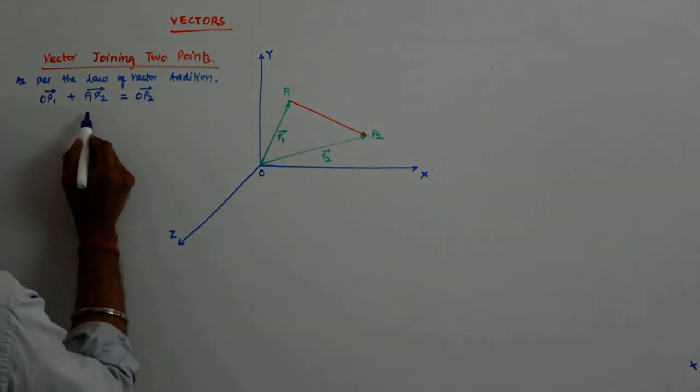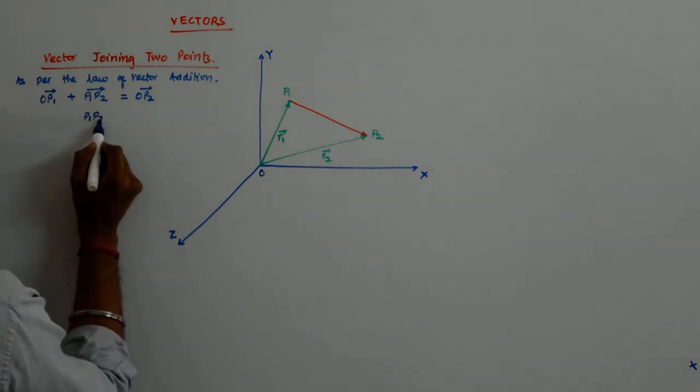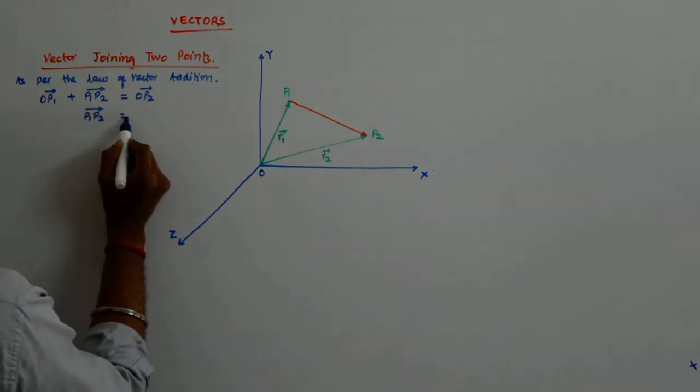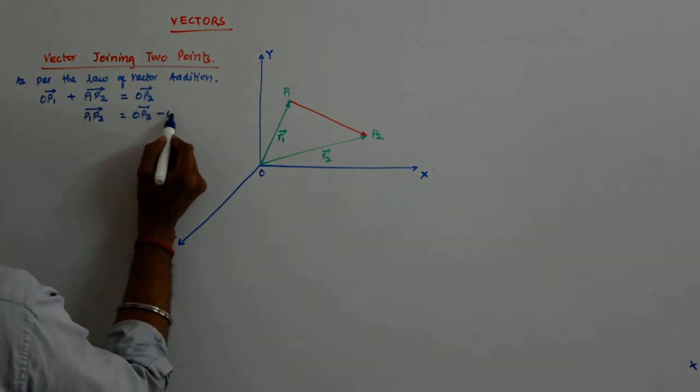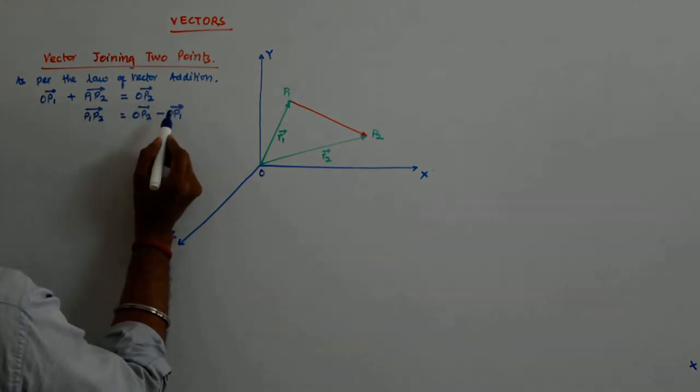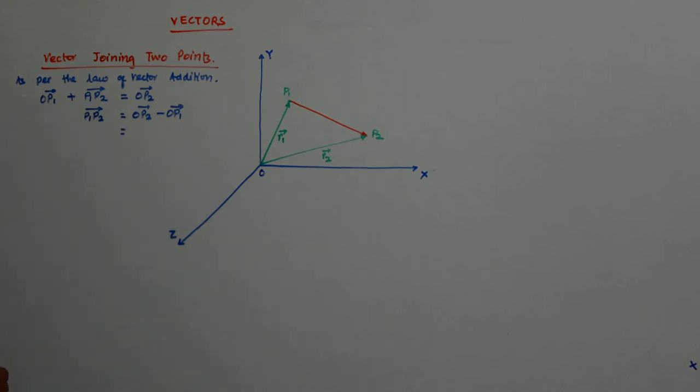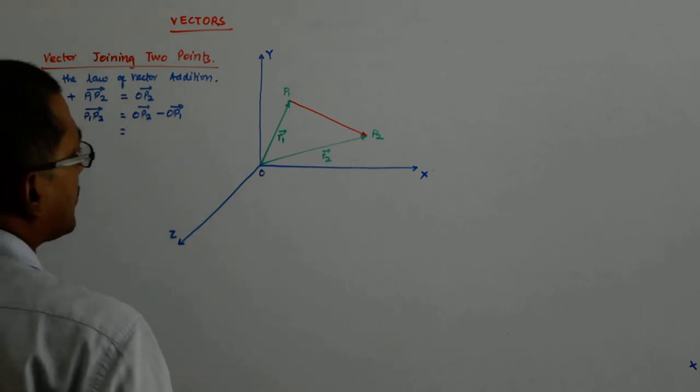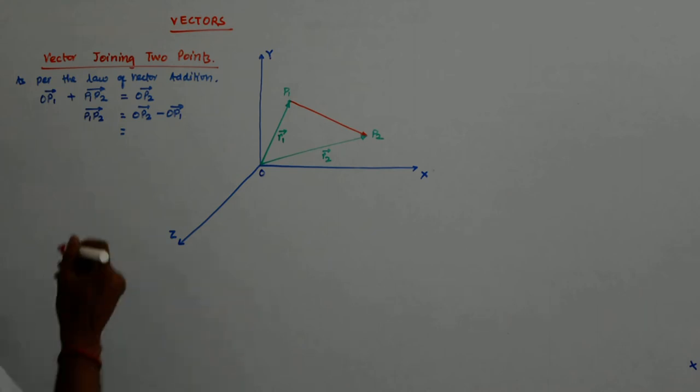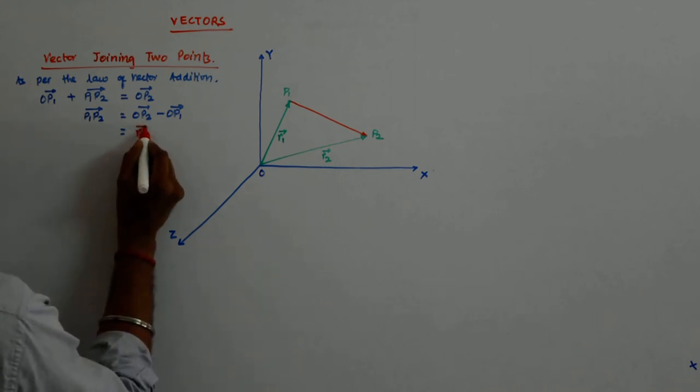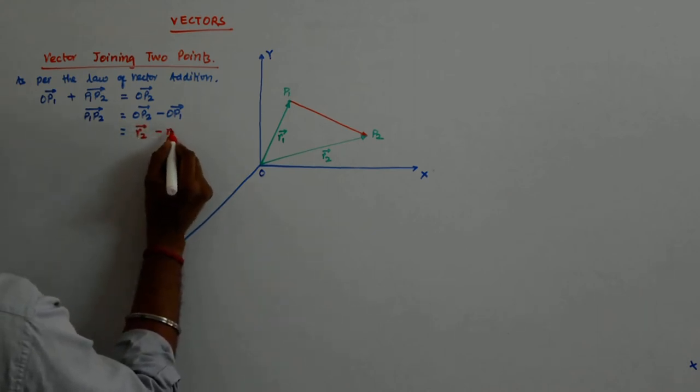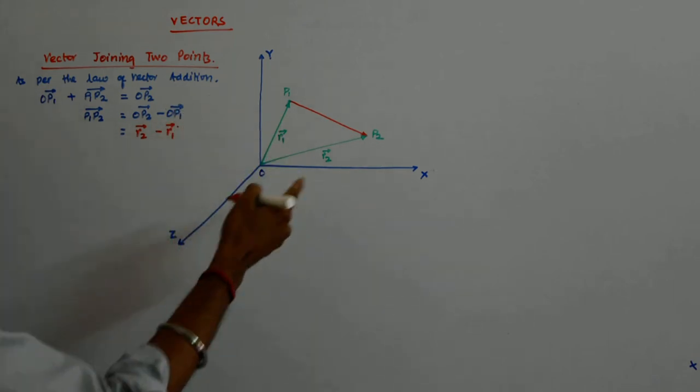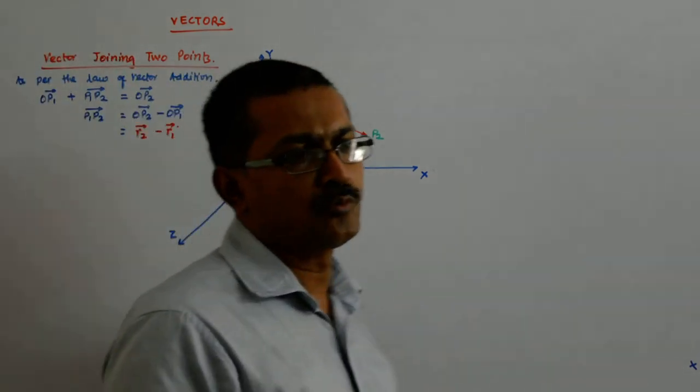So P1P2 is OP2 minus OP1 and what is OP2? OP2 is R2. Is it not? So this is R2 and this is R1. So P1P2 is R2 minus R1. Is it not?